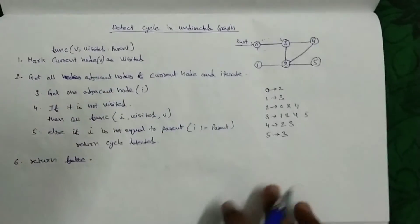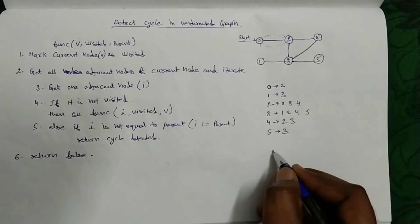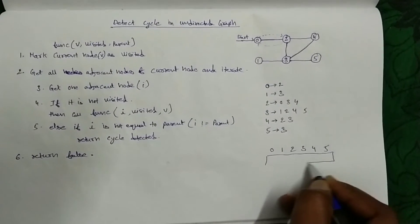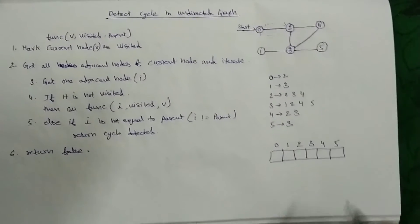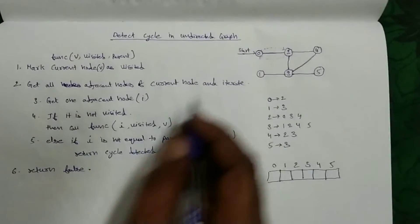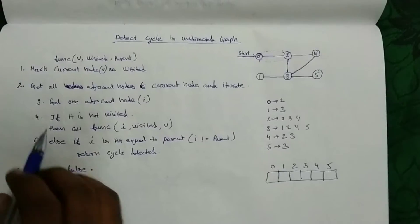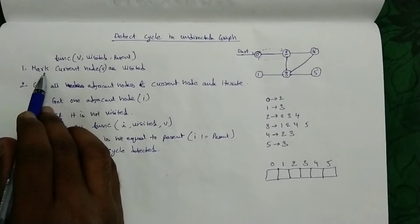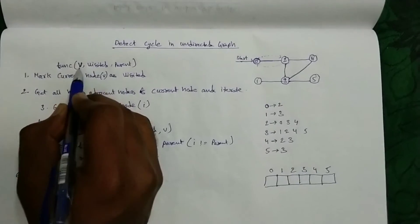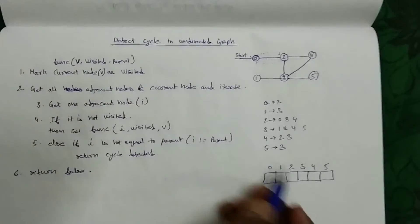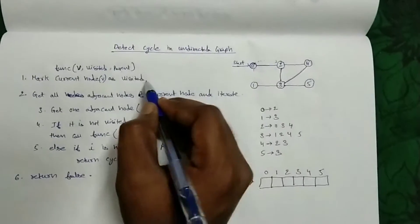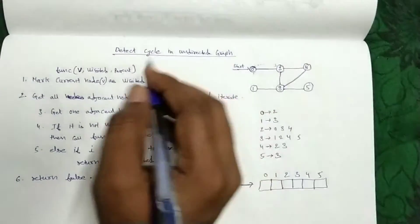We also need a Boolean visited array for nodes 0, 1, 2, 3, 4, 5 — to track whether nodes are visited or not. Starting, all nodes will be false or 0, meaning all nodes are not visited. Then we will start with node 0 and follow the algorithm. This function takes three parameters: one is V, that is the node; one is the visited array; and one is the parent — the parent of this node. At first, the parent of the starting node is nothing, so we will pass minus 1.